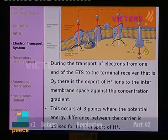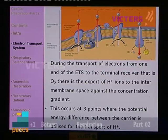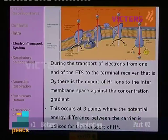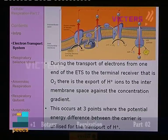One has to understand what is happening during the transport of electrons from NADH — the highly energy-rich molecule — to the electron-receiving end, oxygen. In between, the transfer is somewhat energy-releasing — some amount of potential energy is released. This potential energy is used to pump hydrogen ions from the inner region (the matrix) to the inter-membrane space, against the concentration gradient. The concentration of hydrogen ions in the outer region of the inner membrane is high.